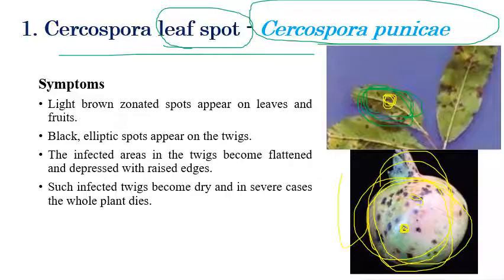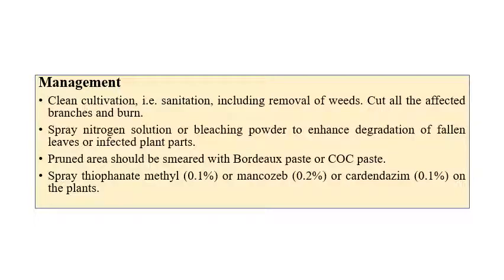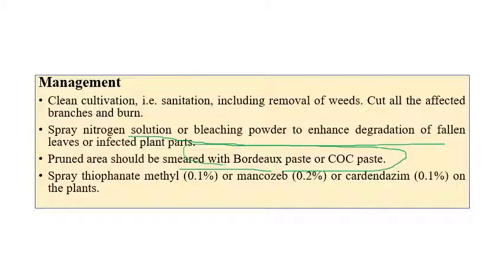In severe infection, entire leaves will start to defoliate and the plant will die. For management, clean cultivation and sanitation are important, including removal of weeds, cutting affected branches, and burning them. Spraying of urea solution and bleaching powder enhances degradation of fallen leaves and destroys inoculum. Pruned areas should be covered with Bordeaux paste or copper oxychloride paste. Spraying of thiophanate methyl 0.1%, mancozeb 0.2%, or carbendazim 0.1% can give effective control.